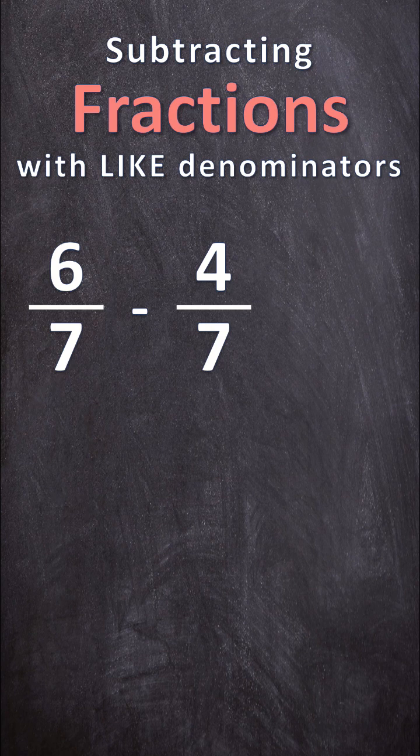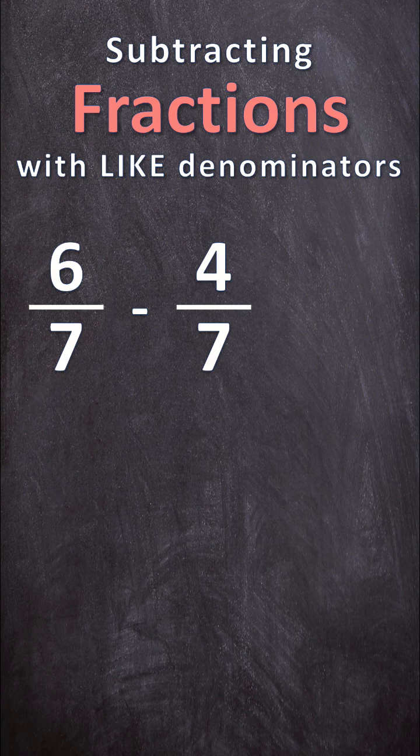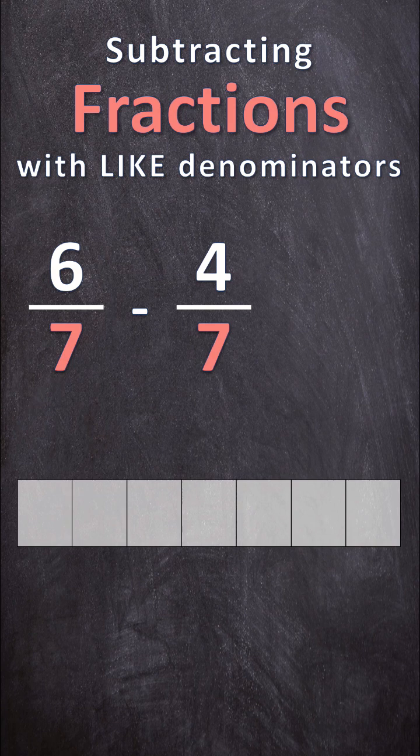So I'm going to start by drawing a rectangle and dividing it into 7 equal pieces like our denominator says. And for the first fraction, I'm going to color in 6 of those 7 equal pieces.